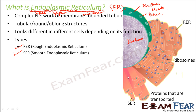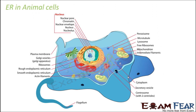Now we will talk about the two types, RER and SER. Let us look at the location of endoplasmic reticulum in animal cells. Here you can see rough and smooth endoplasmic reticulum. This is rough endoplasmic reticulum and this is smooth endoplasmic reticulum. Here you can also see the structure.